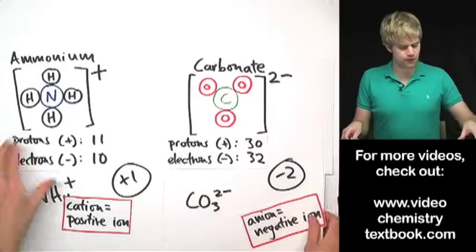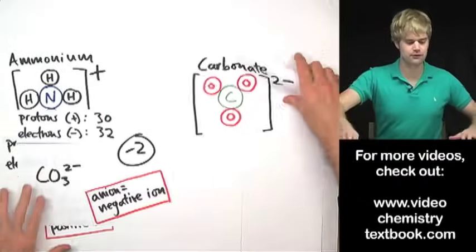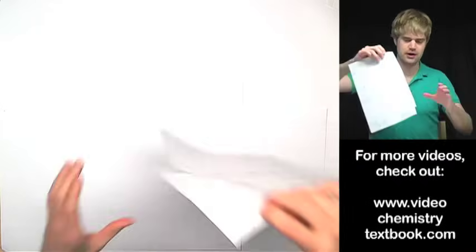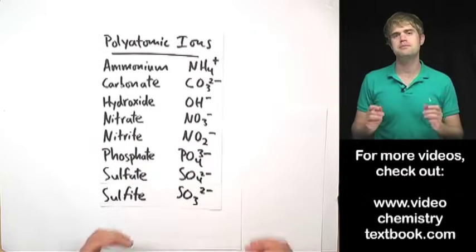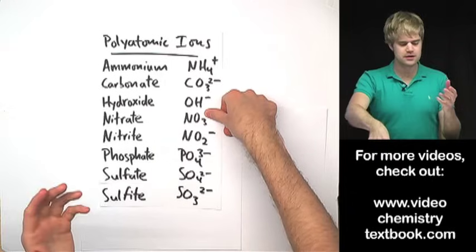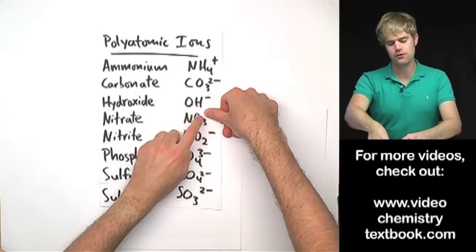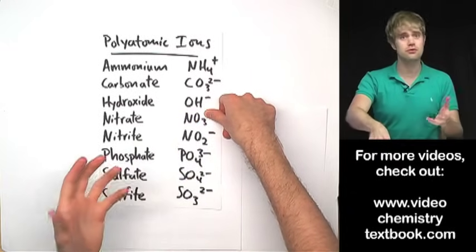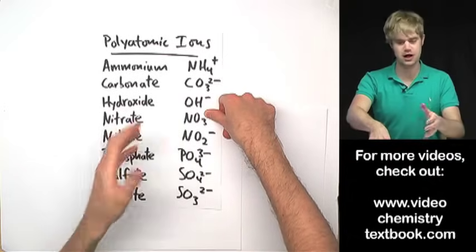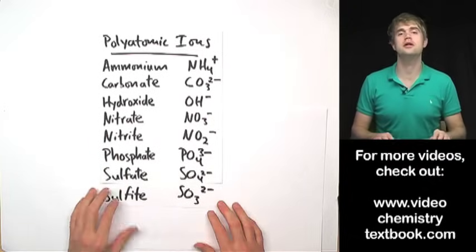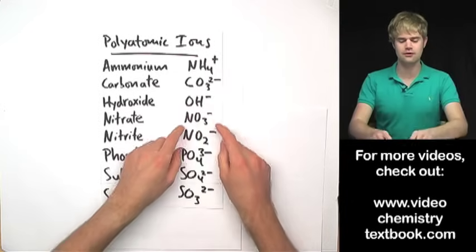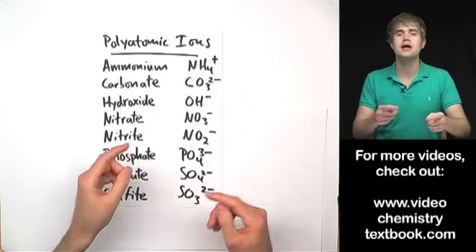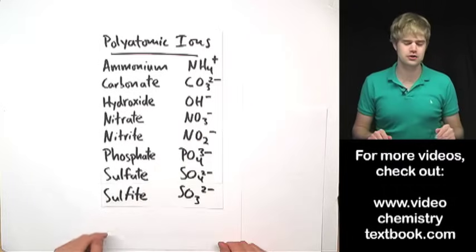As I said before there are a whole bunch of polyatomic ions. I have a small number of them on this list right here. A lot of times people ask me, they say okay if I knew that say nitrate was NO3 but I didn't know the charge would it be possible for me to figure out the charge just on my own? And unfortunately no. It's very difficult to figure out how many electrons a polyatomic ion has and so you need that to figure out the charge.